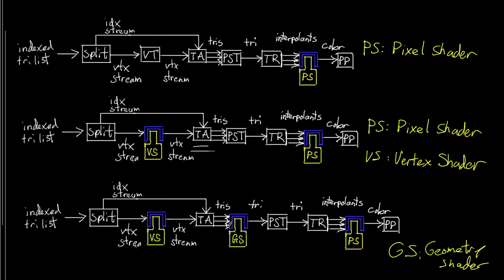You might be saying: what's the point of this if you're just processing vertices — why not do that in the vertex shader? Well, the vertex shader has a bit of tunnel vision: it looks at each vertex individually and can't see what triangle that vertex is part of. But the geometry shader gets all three vertices of the triangle at once, so it can see what kind of triangle it's working with and use that information for more advanced processing.